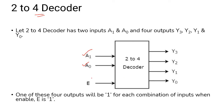For the 2-to-4 decoder, we have 2 input lines and an enable input. When disabled the inputs will be 0. The decoded outputs are Y0, Y1, Y2, and Y3.